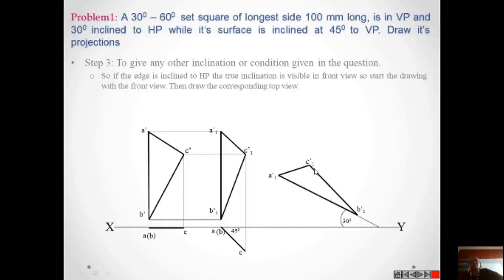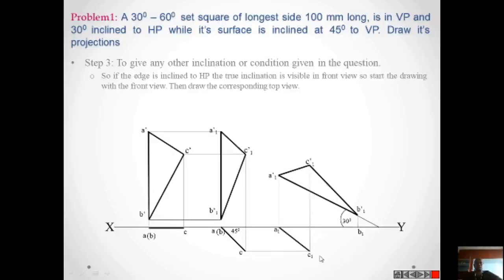Now draw the projections upward and draw the locus lines. You identify intersection points: the locus line from here and the projection from A intersect to give A1; the locus from B and projection from B give B1; and similarly for C1. Join all these points. This is a very simple question. Here we have taken a triangle, but this can be a pentagon, hexagon, square, rectangle, or circle — similar questions can be asked.